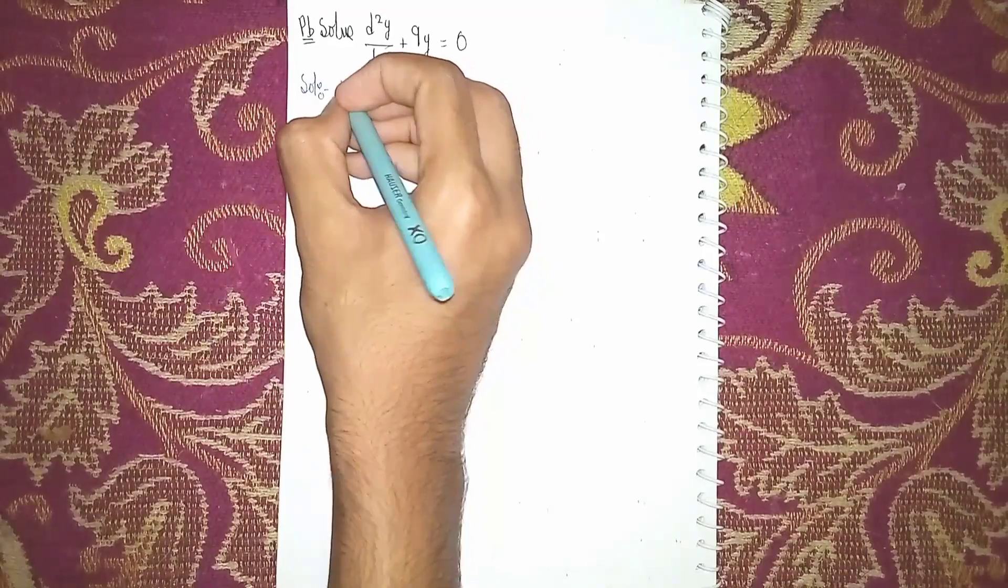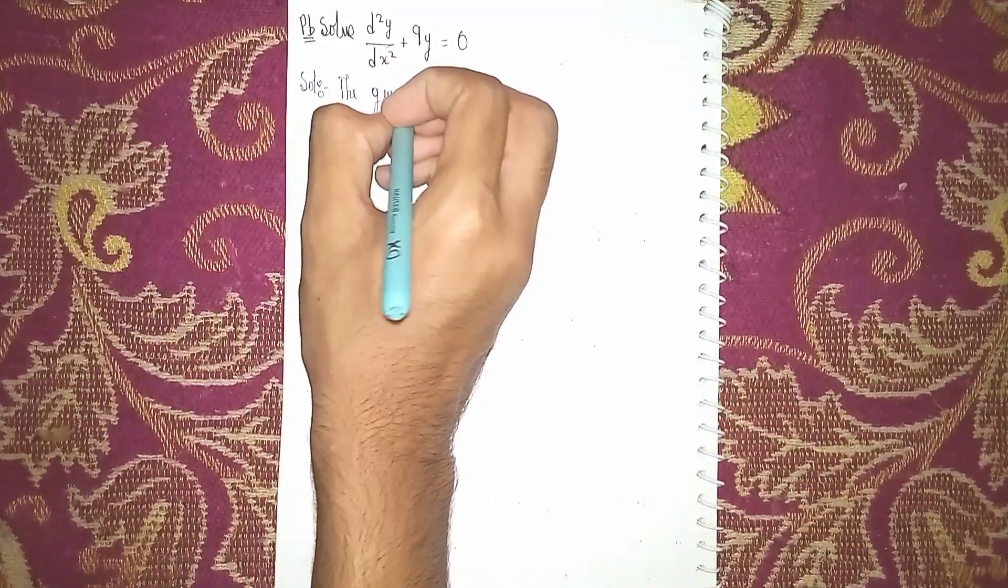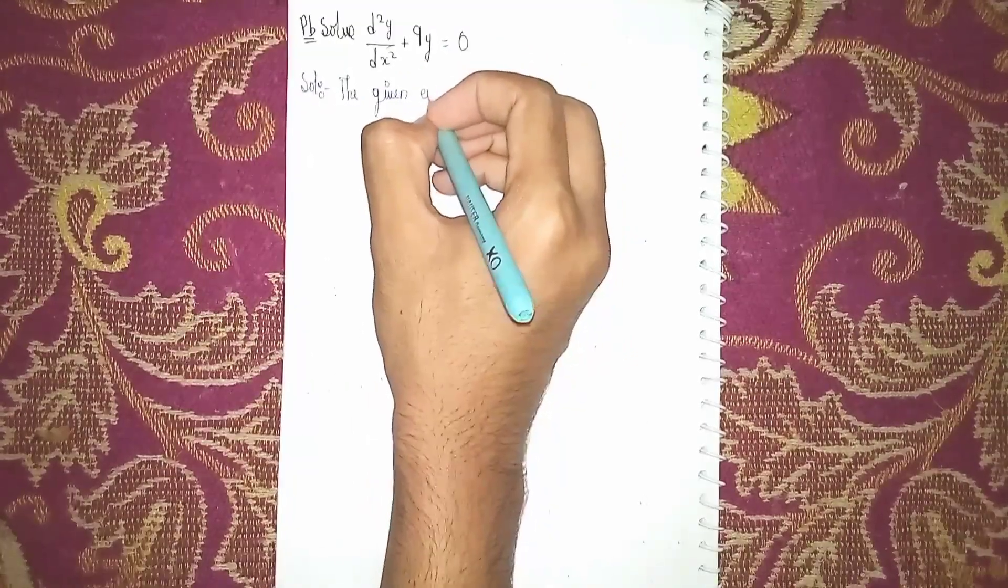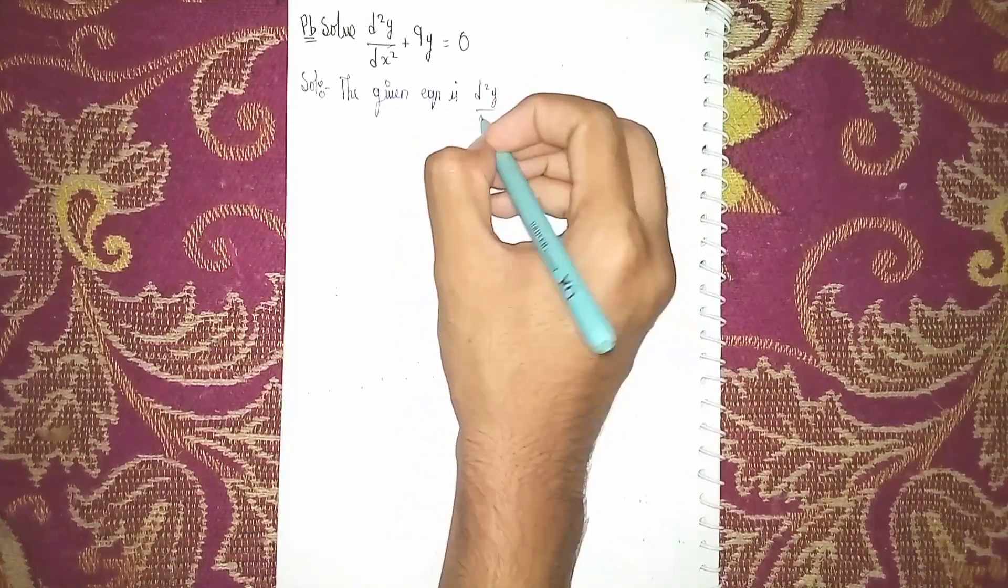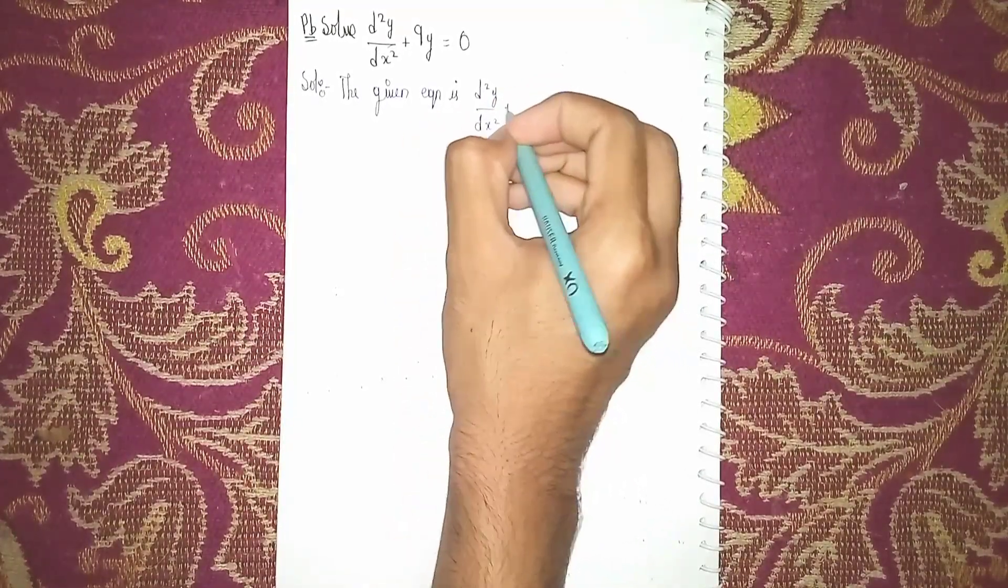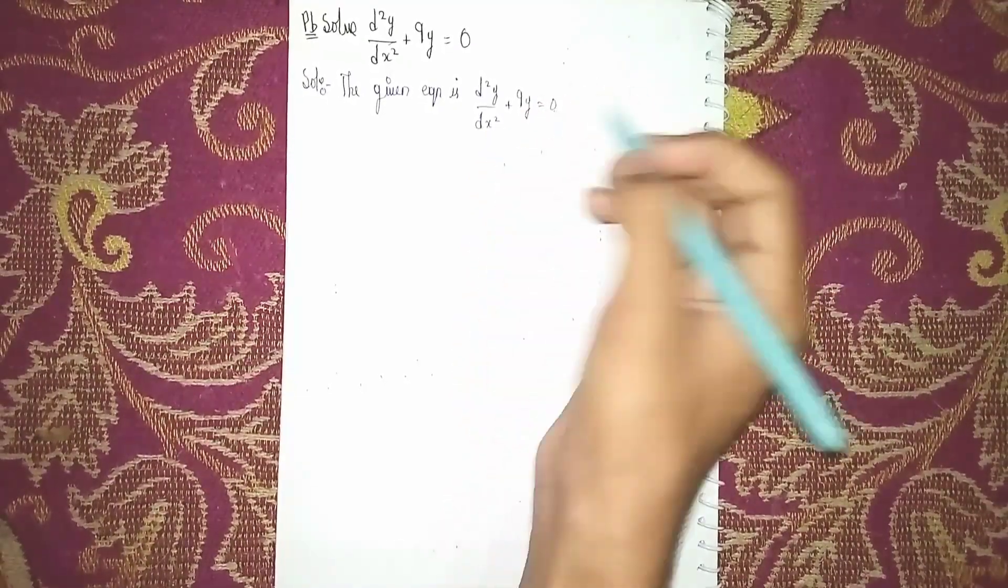The given equation is d²y/dx² + 9y = 0. Write the given equation in symbolic form.